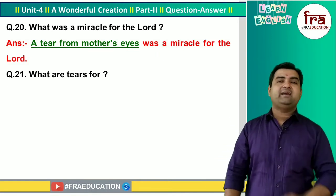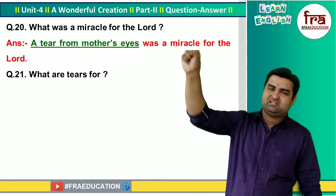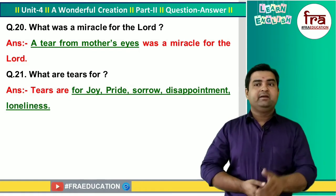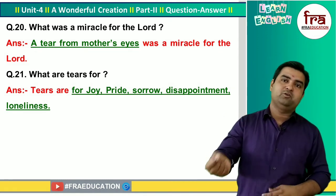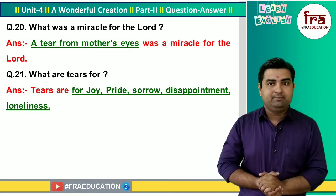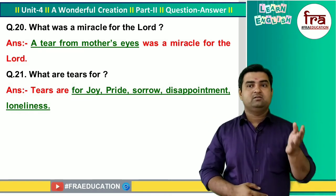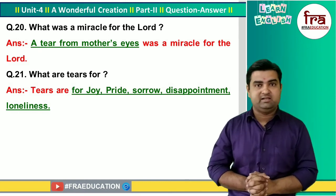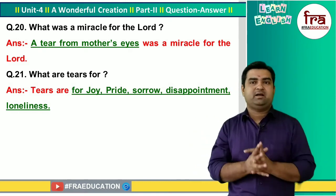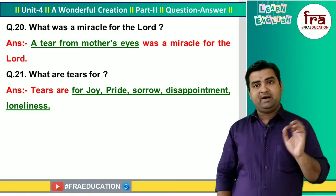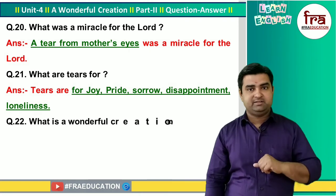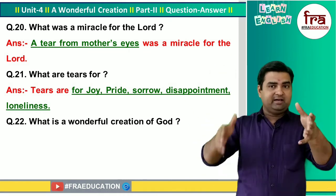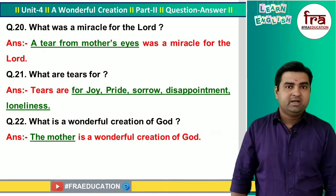Question number 21: What are the tears for? The tears are for joy, happiness, pride, disappointment, loneliness, and sorrow. Question number 22: What is a wonderful creation of God? Mother is a wonderful creation of God — this is also the title of our unit.